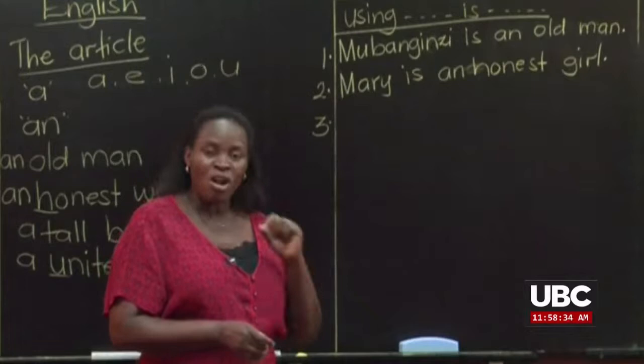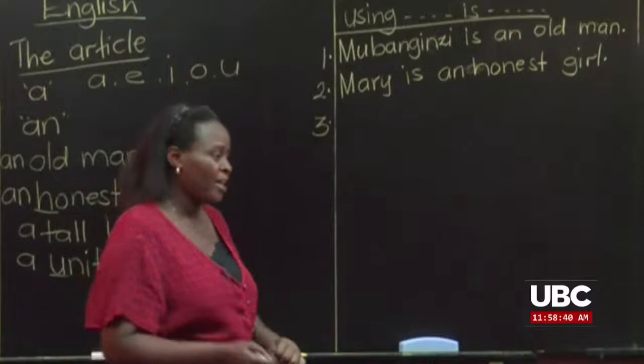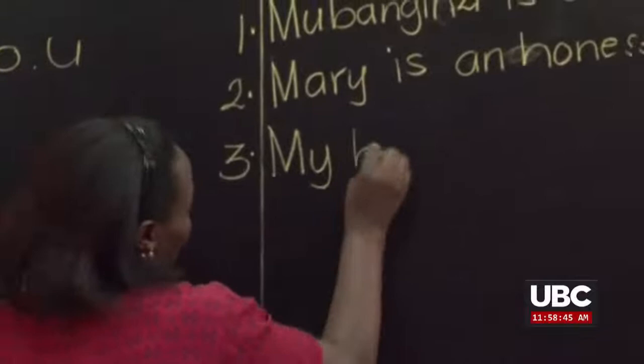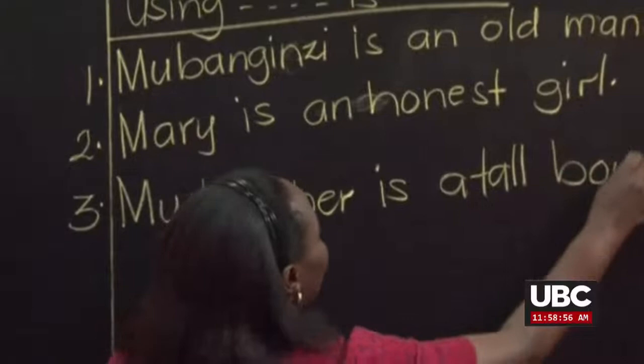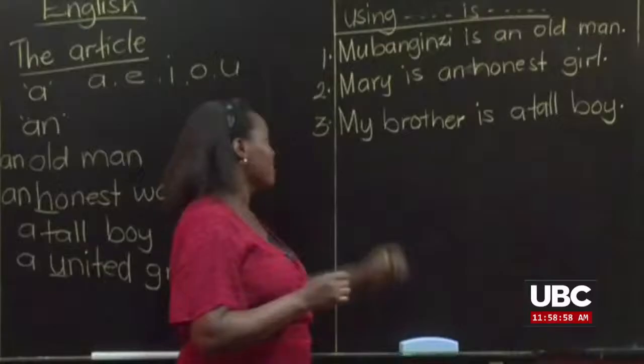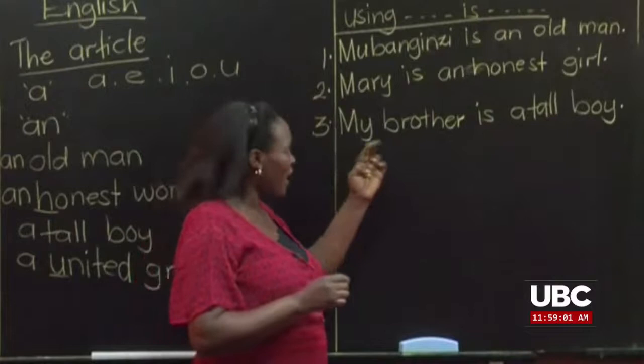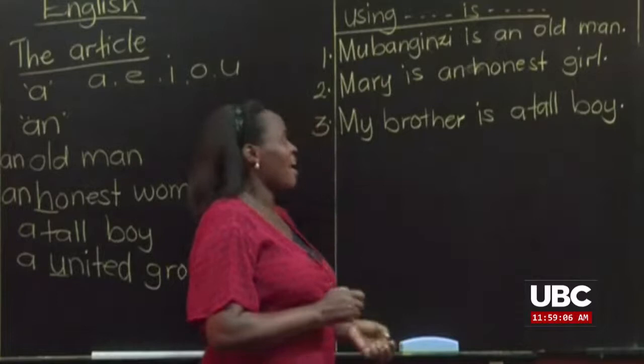Since 'honest' sounds as a vowel, we use the article 'an'. So we say: 'Mary is an honest girl.' For our third sentence, we use the word 'tall'. We say 'a tall boy'. Which sentence can we get? Let's use 'my brother' as the subject. 'My brother is a tall boy.' We are describing the brother as being a tall boy. We have used 'a' because 'tall' begins with a consonant.